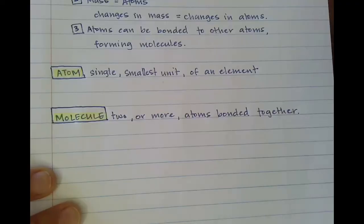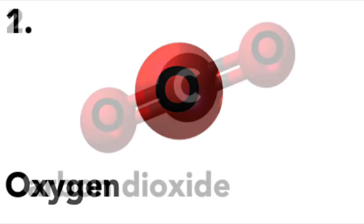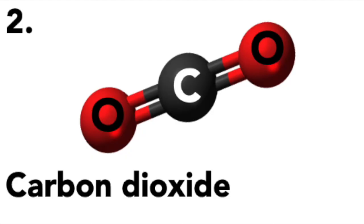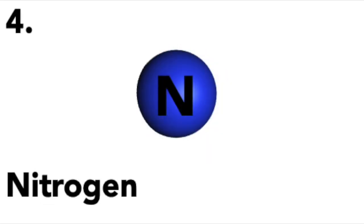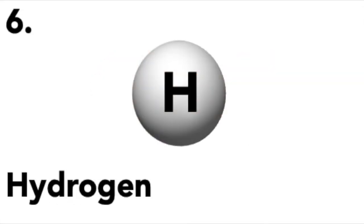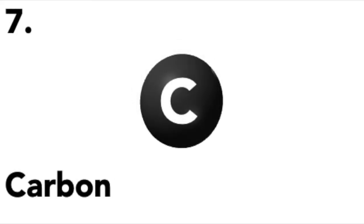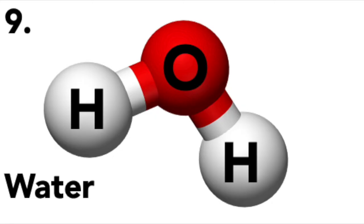Now that we have the definitions of an atom and a molecule, let's do some practice. I'm going to show you pictures, and you have to decide if it's an atom — a single thing — or a molecule — two or more atoms stuck together. Number one: atom. Number two: molecule. Number three: atom. Number four: atom. Number five: molecule. Number six: atom. Number seven: atom. Number eight: molecule. Number nine: molecule.